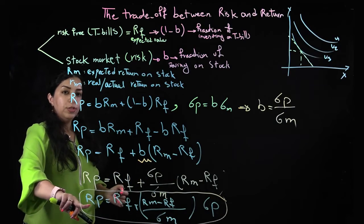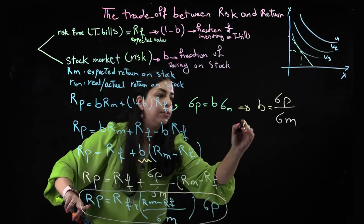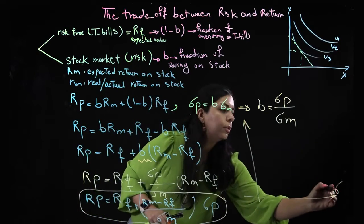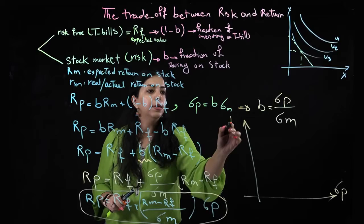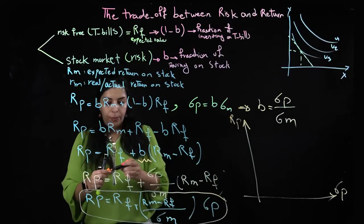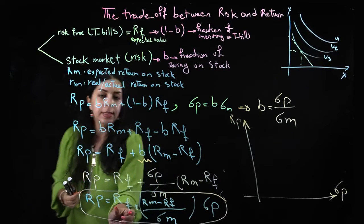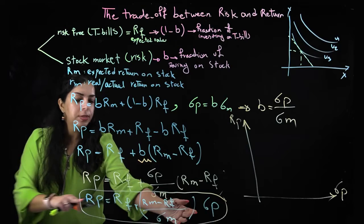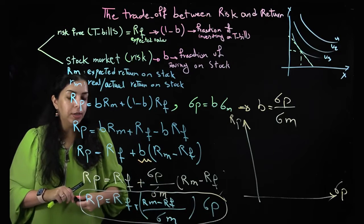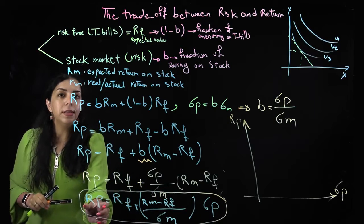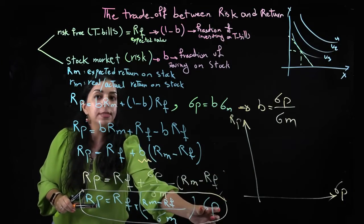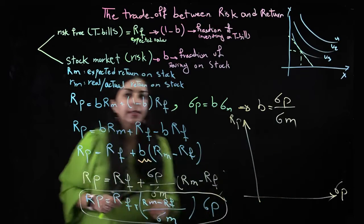So what is it saying? If I want to draw it here, I want to draw the risk and return of the portfolio. This is the intercept, this is the slope. So I'm talking about a function. The return on the portfolio is my y-axis, risk of the portfolio is my x-axis.